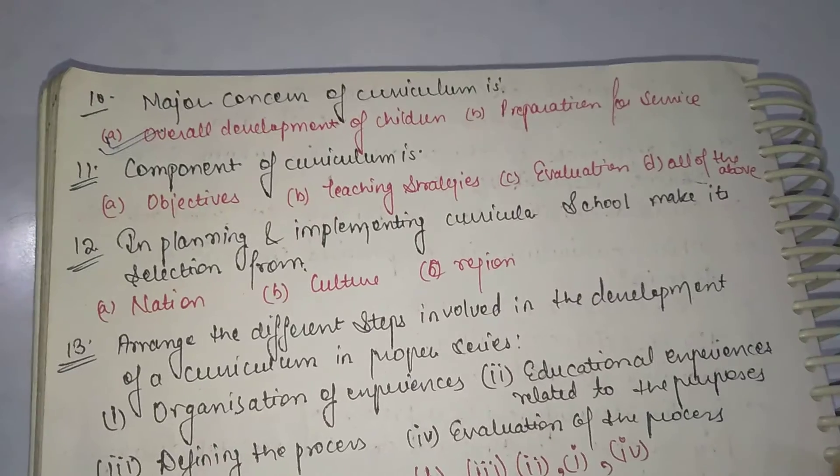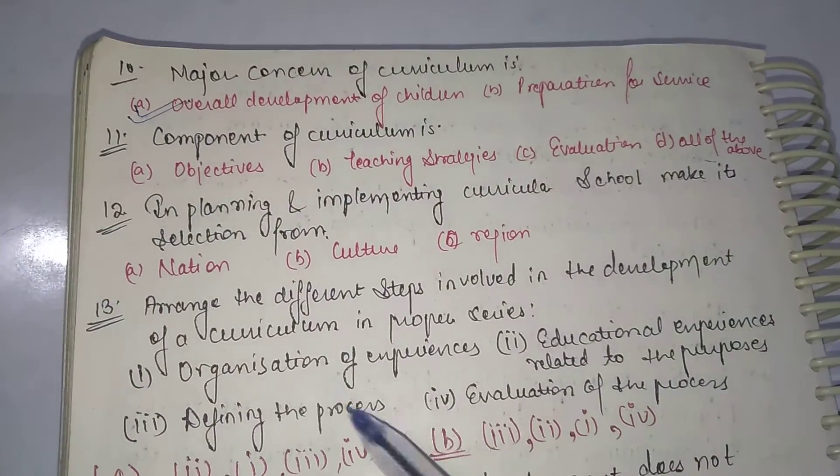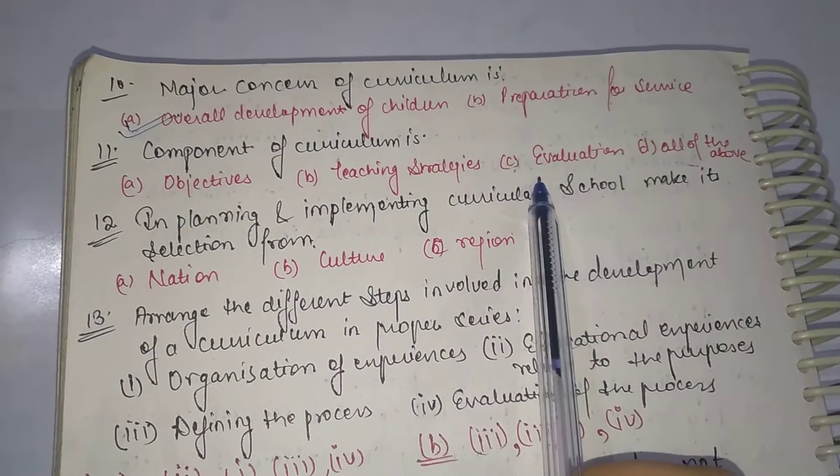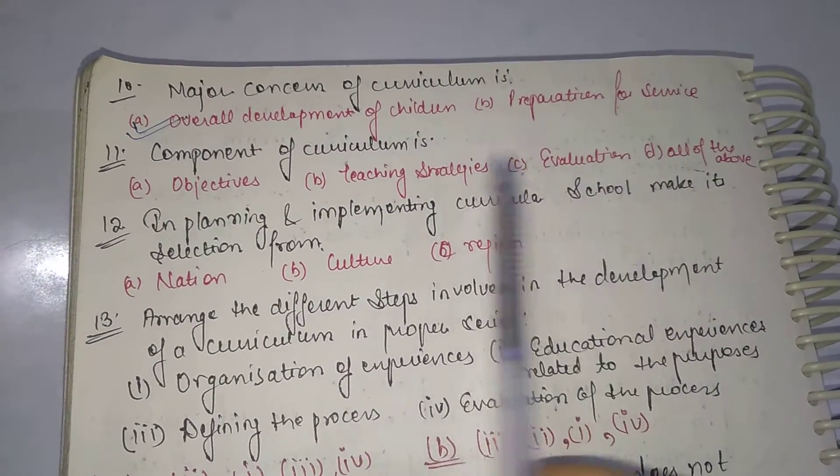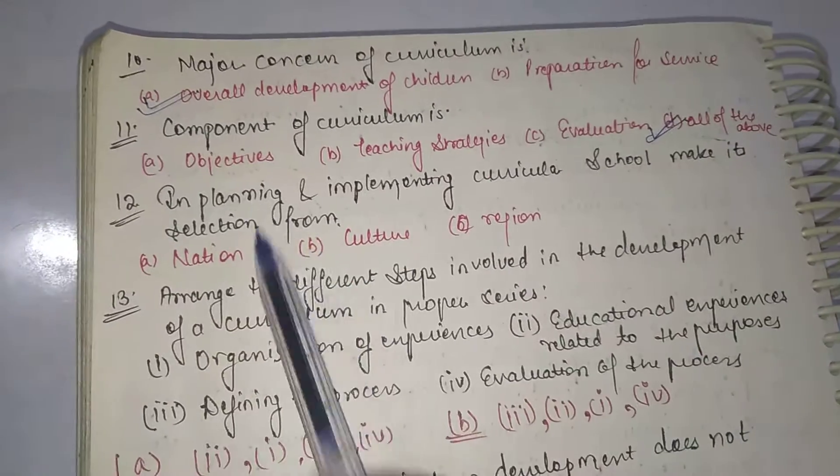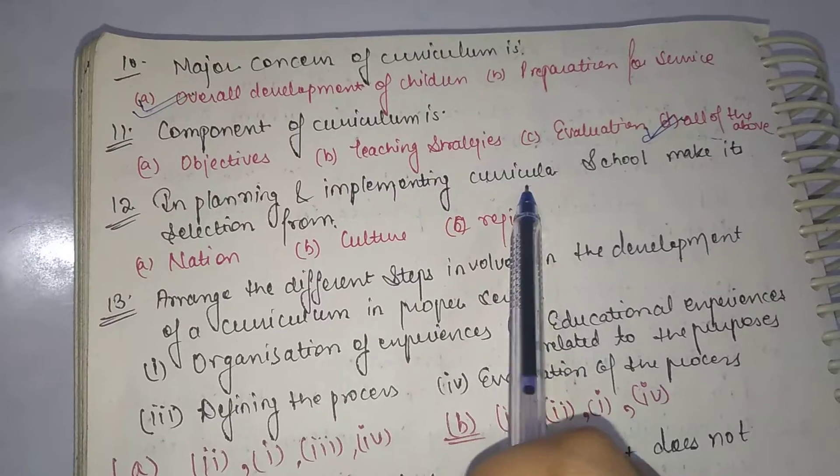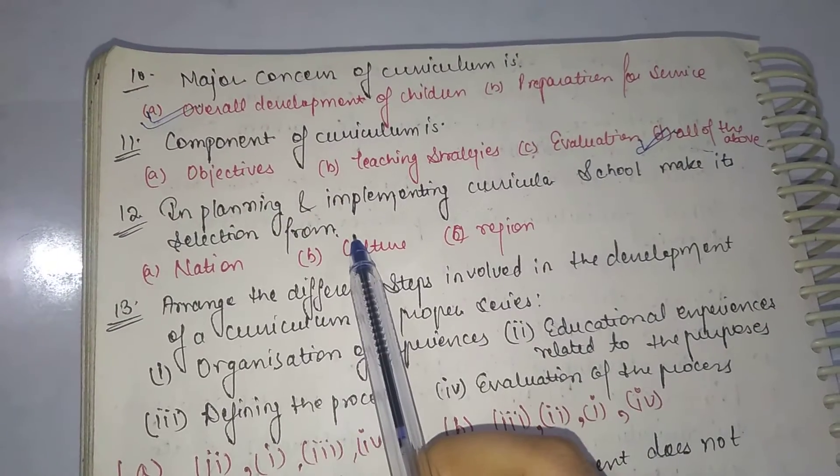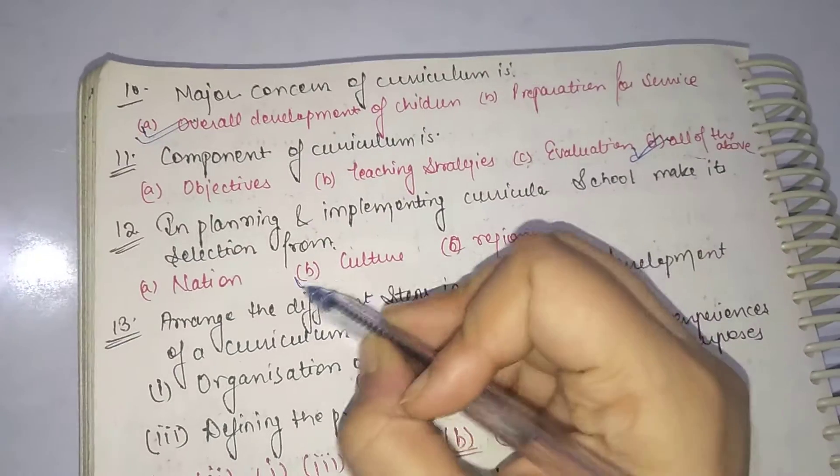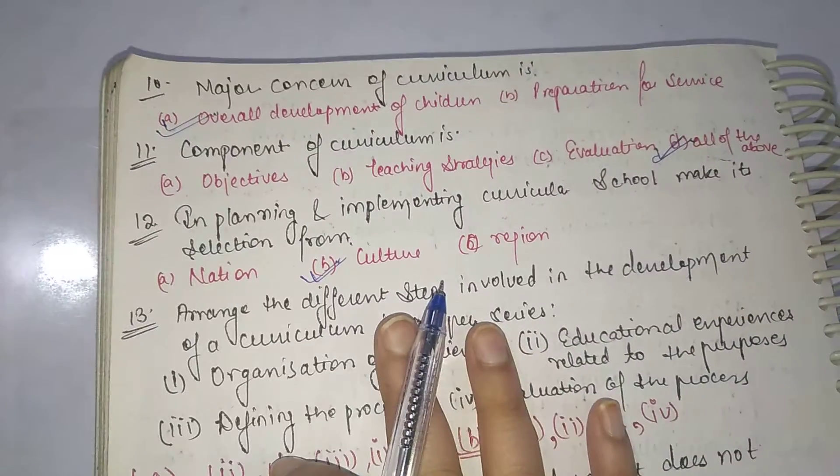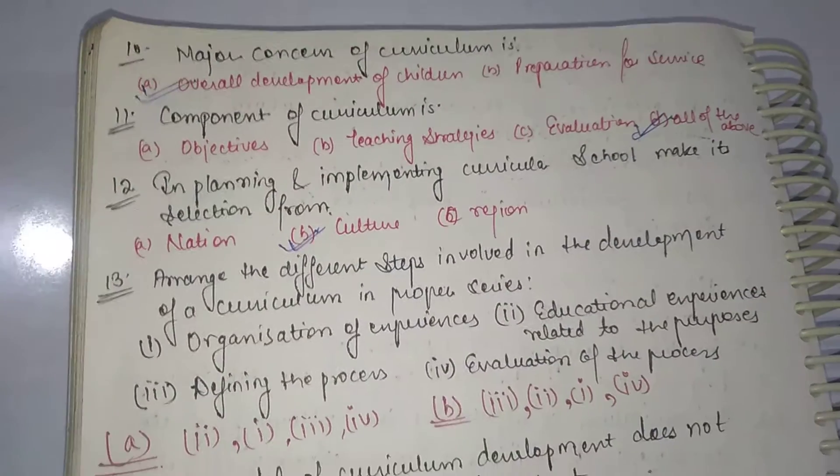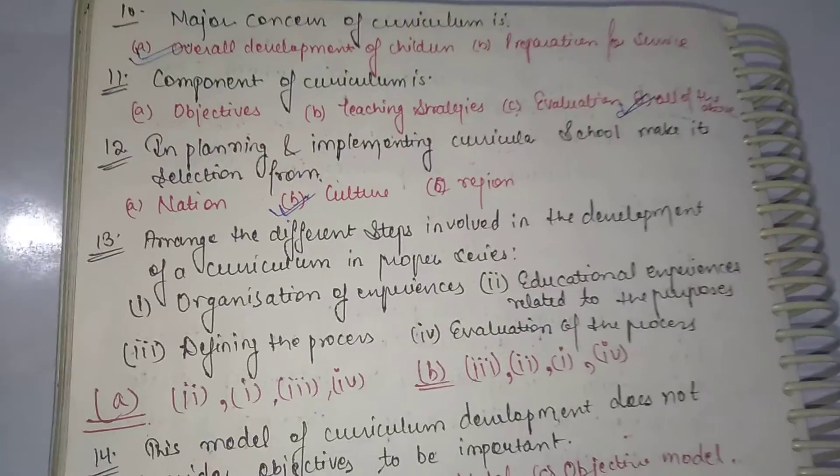The next: Component of curriculum is objectives, teaching strategies, evaluation. So all of the above are components of curriculum. Next is: In planning and implementing curricula, school make its selection from? Curriculum is basically based upon the culture of our society.